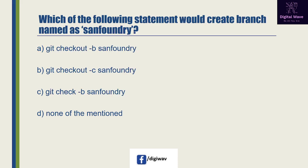Next question: which of the following statement would create a branch named 'send foundry'? Option A is 'git checkout -b send foundry', option B is 'git checkout -c send foundry', option C is 'git check -b send foundry', and the last option is none of the mentioned. The right answer will be A, because a branch in Git is simply a lightweight movable pointer to one of the commits.